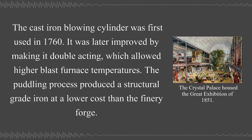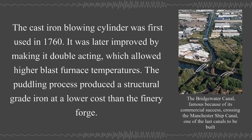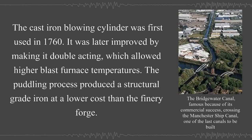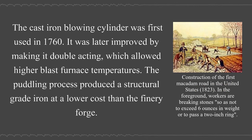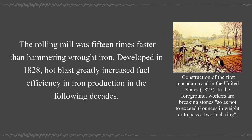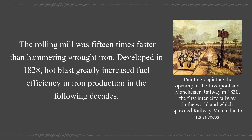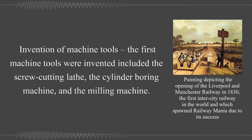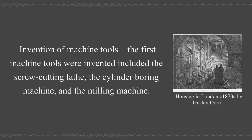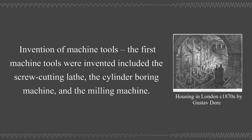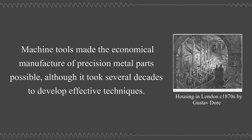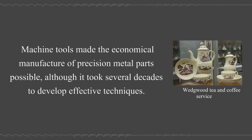The cast iron blowing cylinder was first used in 1760, later improved by making it double acting, which allowed higher blast furnace temperatures. The puddling process produced a structural grade iron at a lower cost than the finery forge. The rolling mill was fifteen times faster than hammering wrought iron. Developed in 1828, hot blast greatly increased fuel efficiency in iron production. The first machine tools invented included the screw-cutting lathe, the cylinder boring machine, and the milling machine, making economical manufacture of precision metal parts possible, though it took several decades to develop effective techniques.